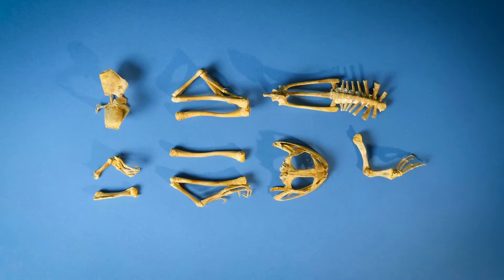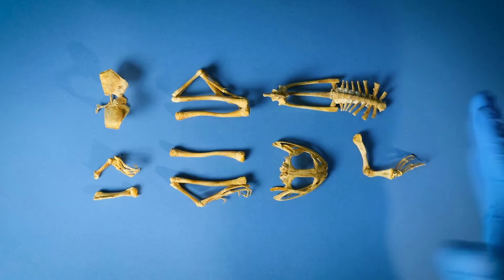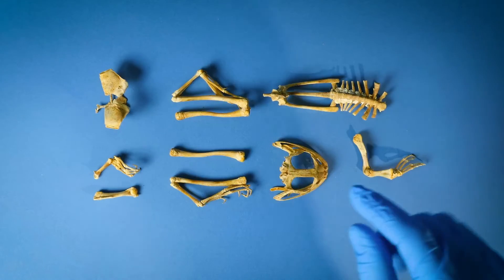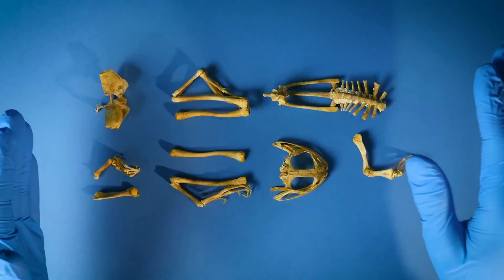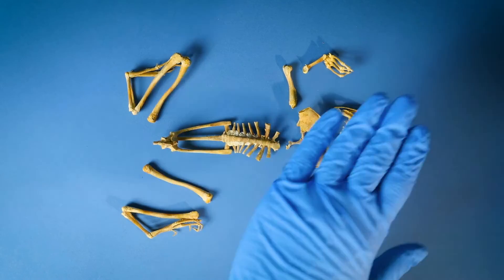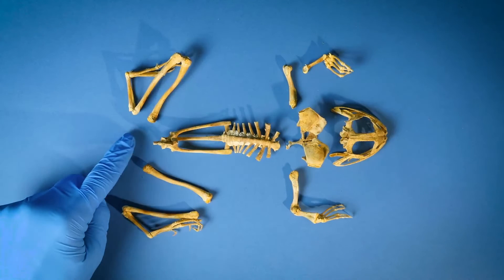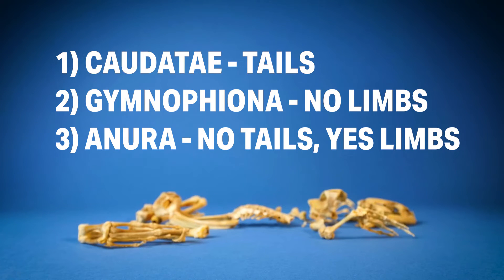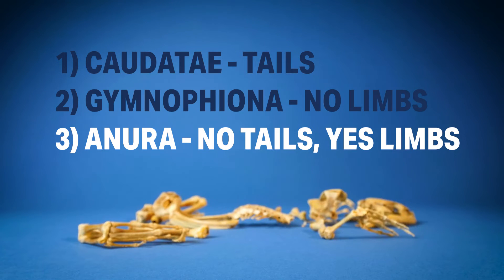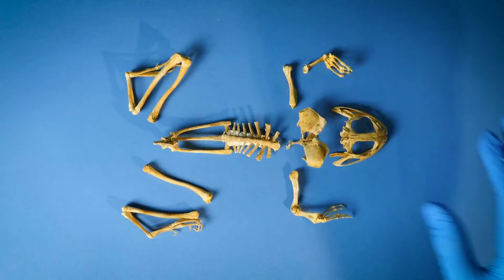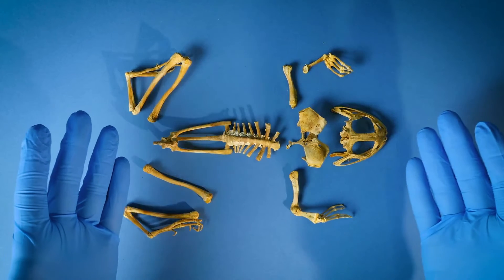So let's look at what we're working with. I'm going to take some time and loosely put this skeleton together and then see if we can eliminate any of those groups. It has no tail, so we can pretty confidently eliminate salamanders. It has four limbs, so we can pretty confidently eliminate caecilians. That means it's a frog or a toad — it does look very frog and toadish. But which one is it?